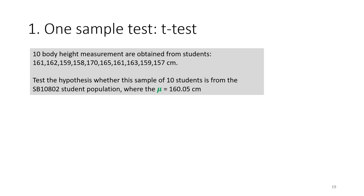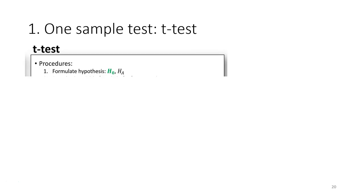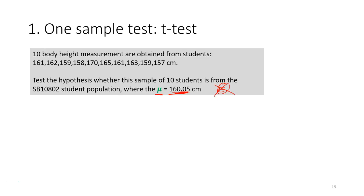I'll demonstrate using this example, which is the same one we used in the Z-test. The question is still the same: we want to test whether these 10 students come from a population where the population mean is 160.05. However, we no longer have the population standard deviation, so we need to perform a t-test. The first step is to formulate the hypothesis.